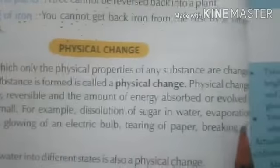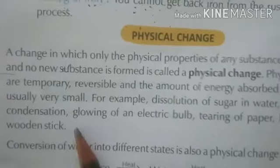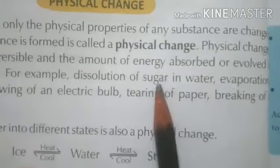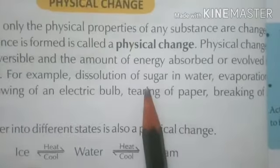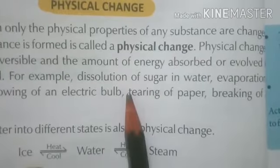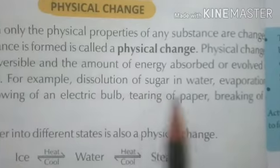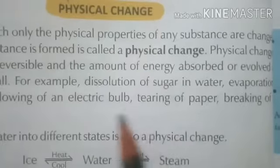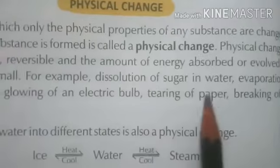For example: dissolution of sugar in water, evaporation, condensation, glowing of an electric bulb, tearing of paper, breaking of wooden sticks — all these are physical changes. Like dissolution of sugar in water: if we mix sugar in water, we get a sugar solution. And again, on heating, we can get the sugar back because the water evaporates and we get the sugar remaining in the container. So this is a reversible, temporary change. That's why it is a physical change. No new substance is formed — we can only separate the sugar and water. Chemical properties remain unchanged, no new substances are formed. So it is a physical change.